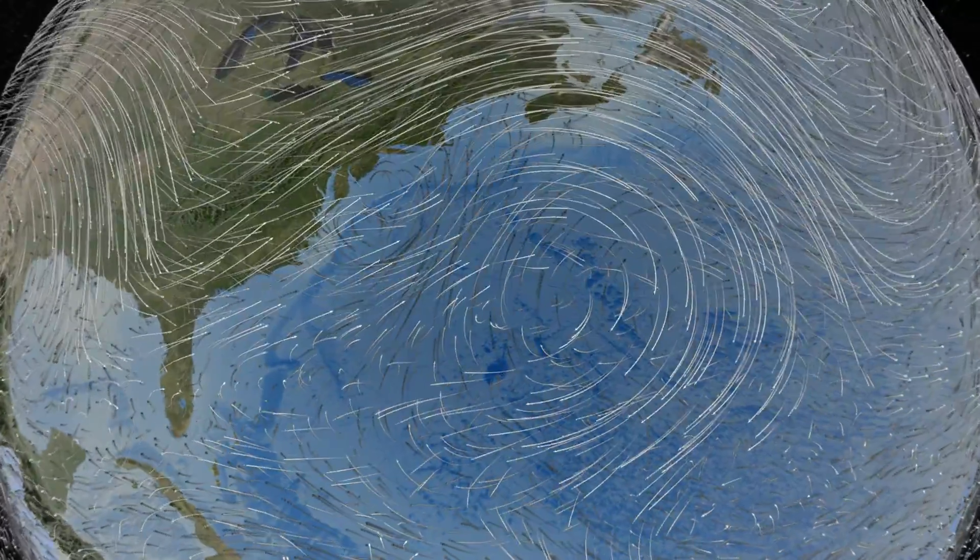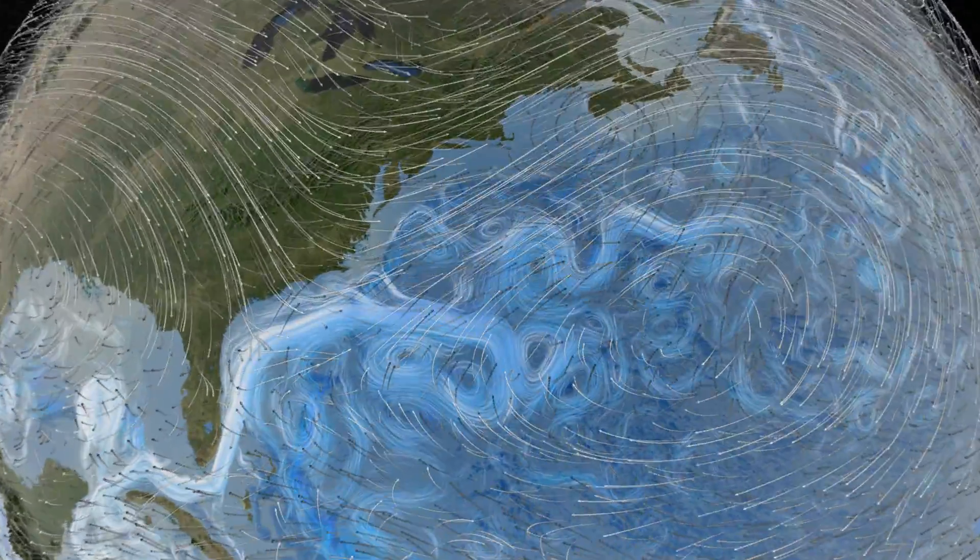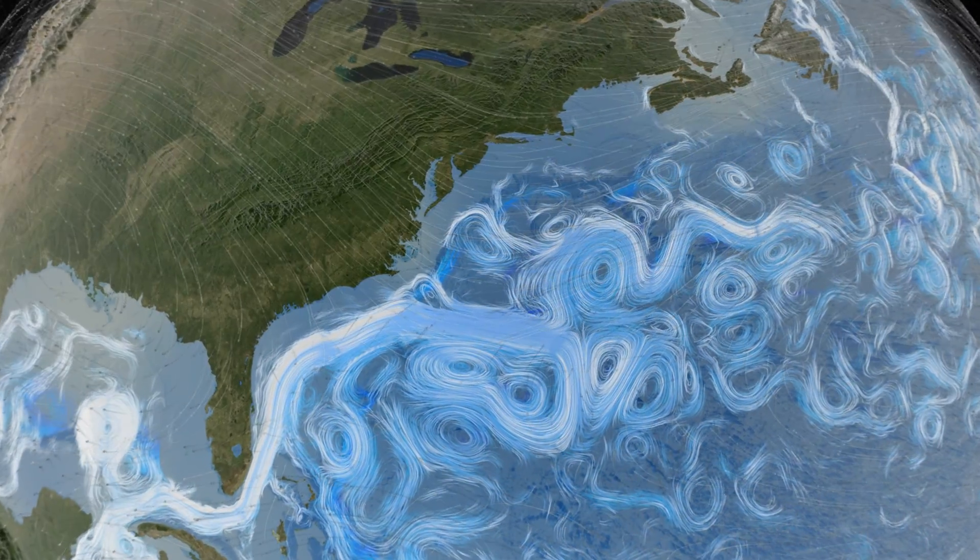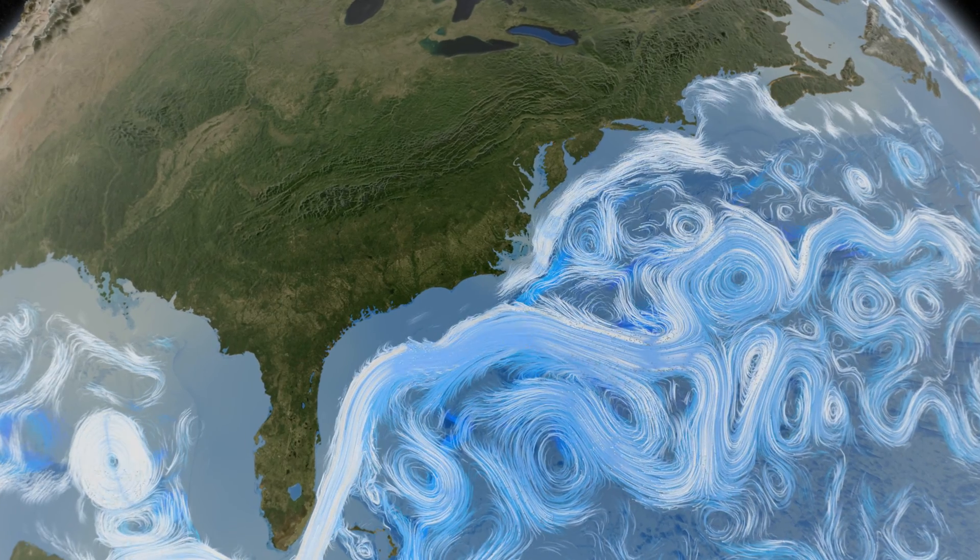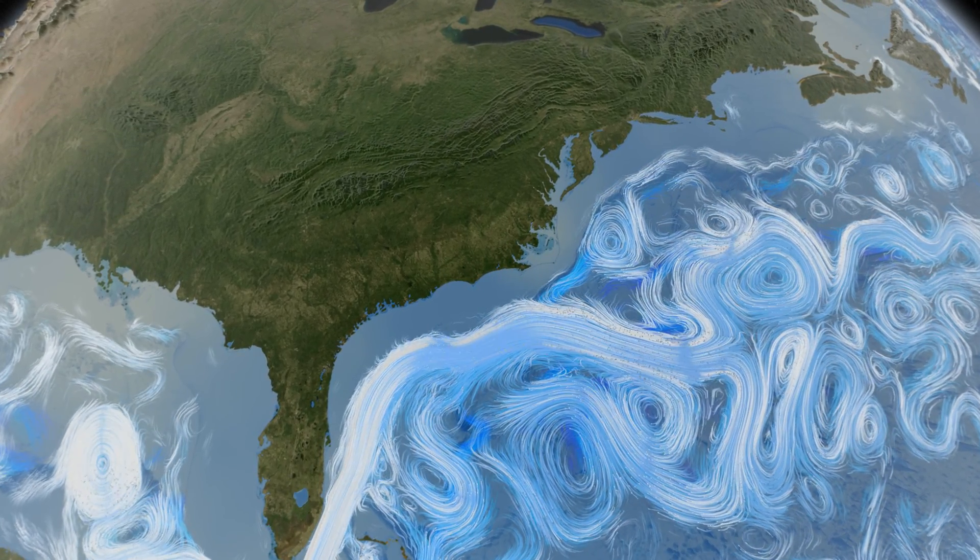Wind currents drive surface ocean currents. This computer simulation shows the Gulf Stream winding its way along the coast of North America.